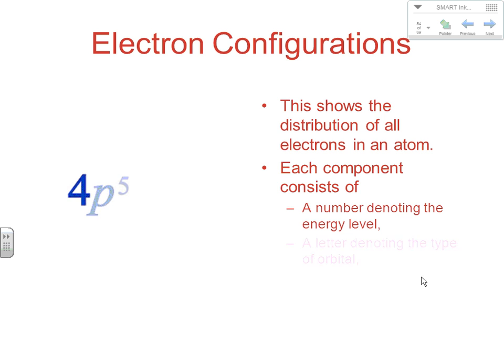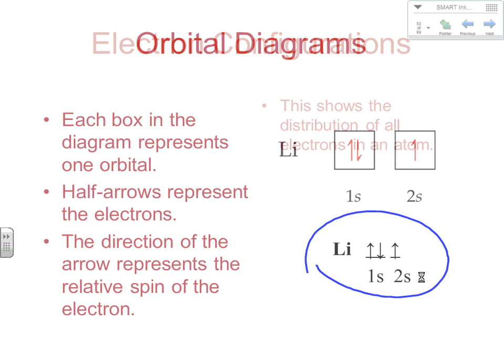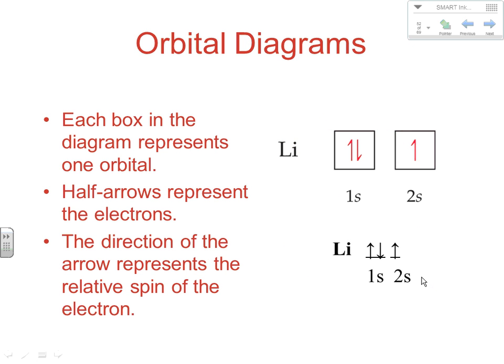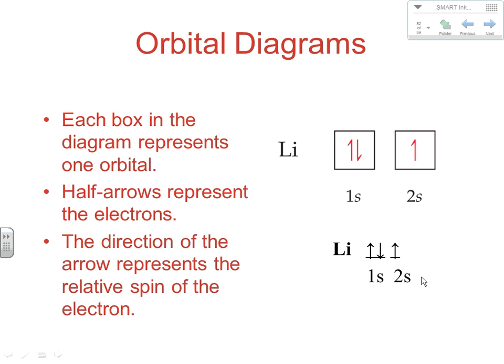Both box diagrams and other notations are valid forms of orbital diagrams. Some people use circles and put 1 versus 2 in them. The only thing I don't like about the circle method is it's harder to show spin — positive one-half, negative one-half, up arrow, down arrow. Either method is a valid way to do orbital diagrams; the box notation is just quicker.